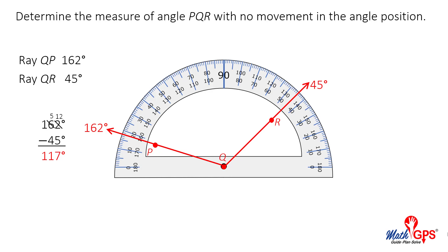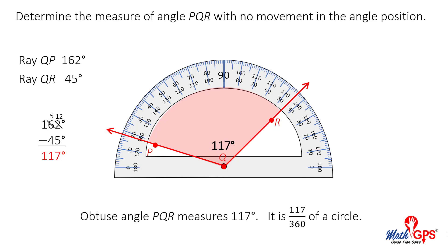Let's count to see if the angle measures 117 degrees: 10, 20, 30, 40, 50, 60, 70, 80, 90, 100, 110, 115, 116, 117. Obtuse angle PQR measures 117 degrees. It is 117/360ths of a circle.